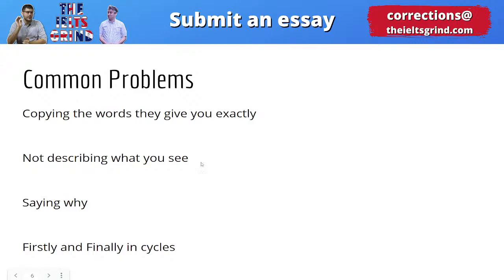The next common mistake is not describing what you see. A lot of students look at the labels for the steps — one or two words describing a stage in a process — and they describe what the word means but aren't actually describing the picture. If you want a really high score and enough to write about, you should be describing what you see. This is the skill they're testing: can you describe a picture?